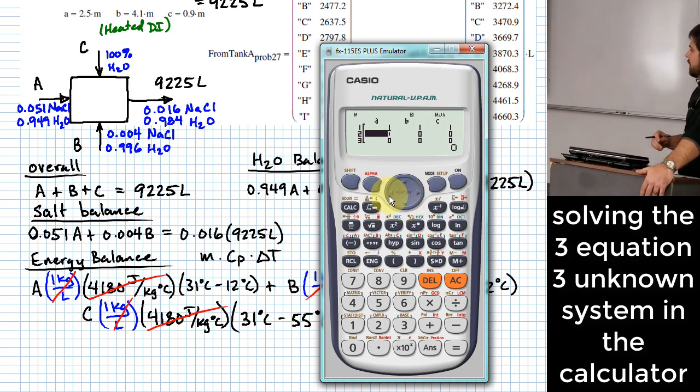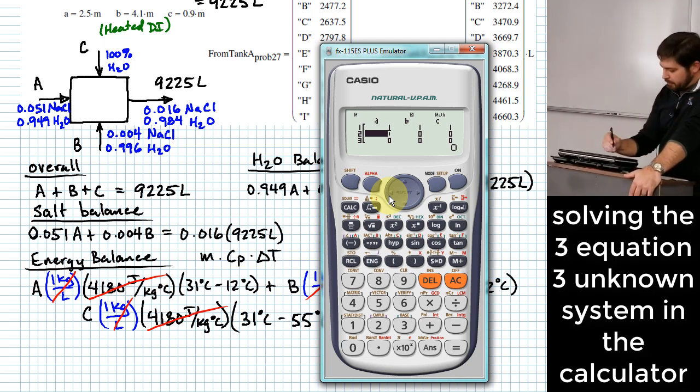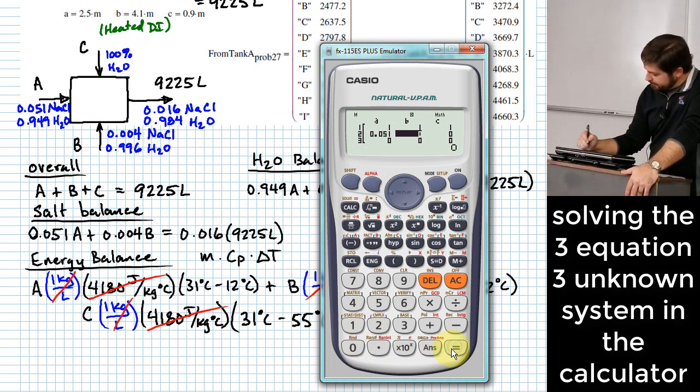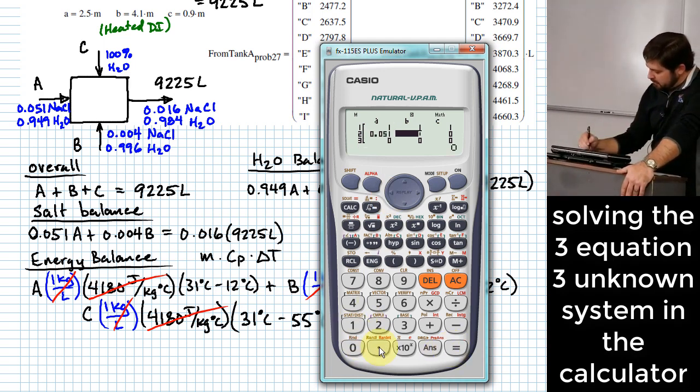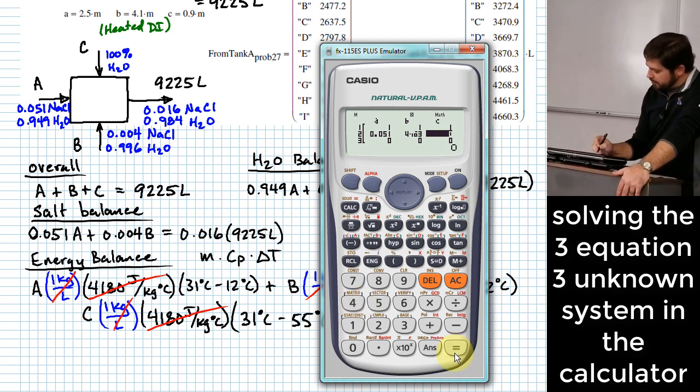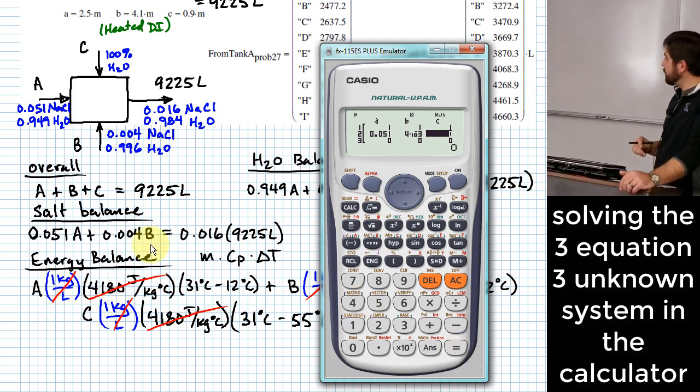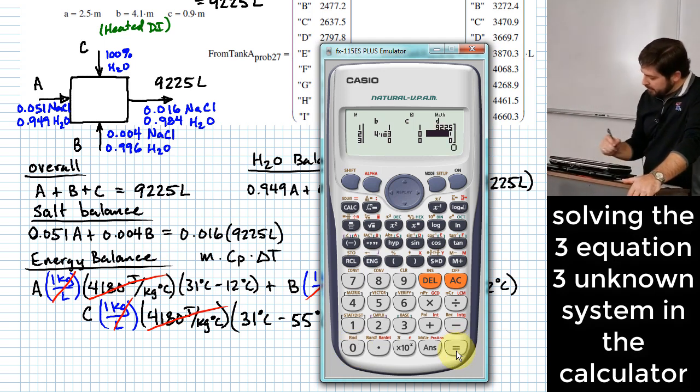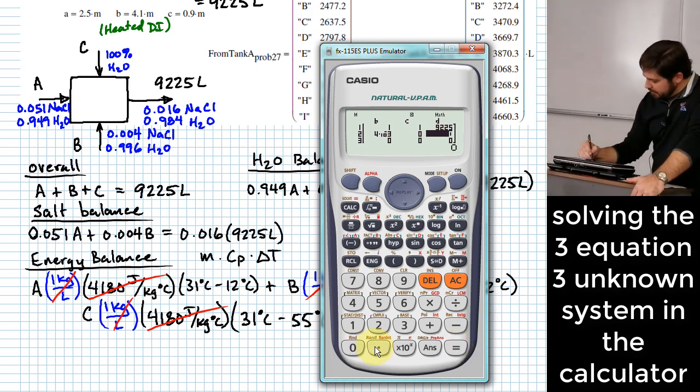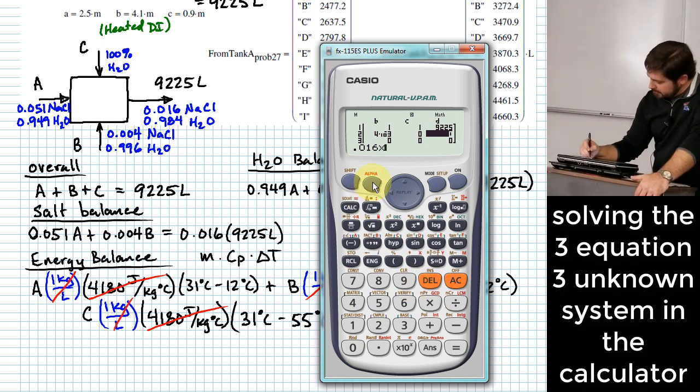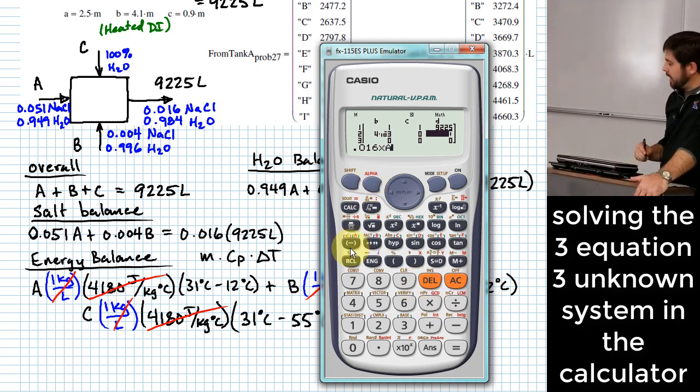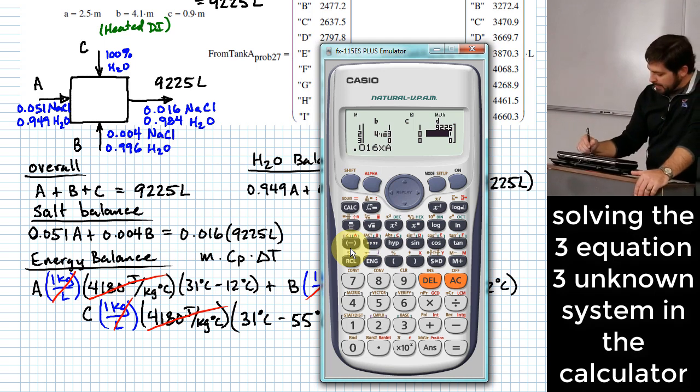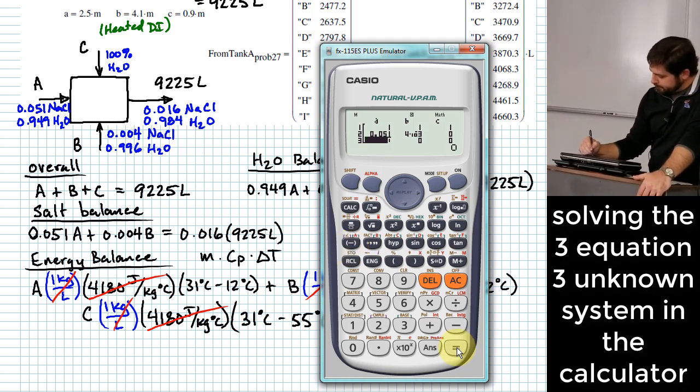What about for the next equation? We'll use that salt balance equation. So we put in 0.051, 0.004 is the coefficient of term B. Now, what do I put in the next slot? I don't have a coefficient for C or the coefficient is zero for C. So I put in a zero. And then lastly, I put in 0.016 times that value of 9225 that I have stored in A.